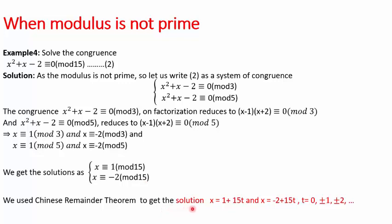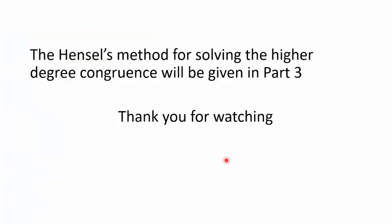The general solution can be written as x = 1 + 15t and x = -2 + 15t. You can verify by substituting a particular value of t back into the original congruence. That was all for Part 2. In Part 3 we will use Hensel's method for solving higher degree congruences. Thanks a lot for watching.